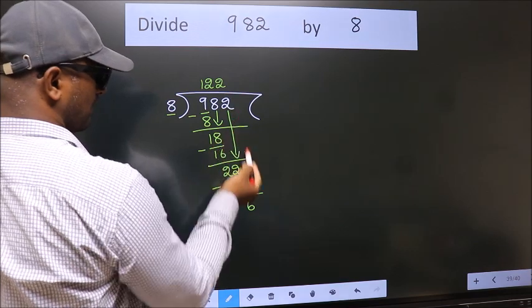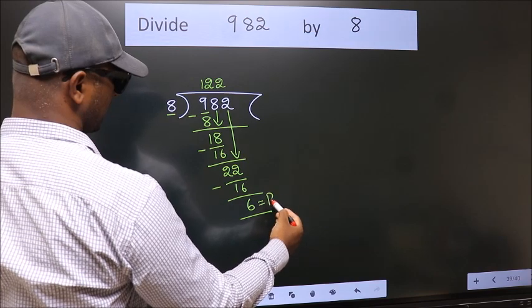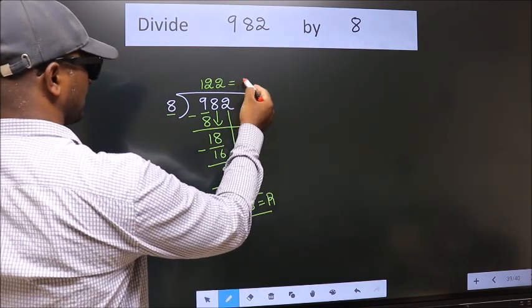No more numbers to bring down, so we stop here. This is our remainder. This is our quotient.